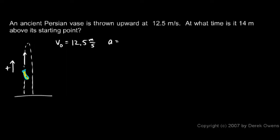Now we know that gravity is negative 9.8 meters per second squared. We know the initial height is zero, and we want to know at what time is it 14 meters above the starting point. So the final height is 14 meters, and the time is what we don't know. That's what we're looking for.